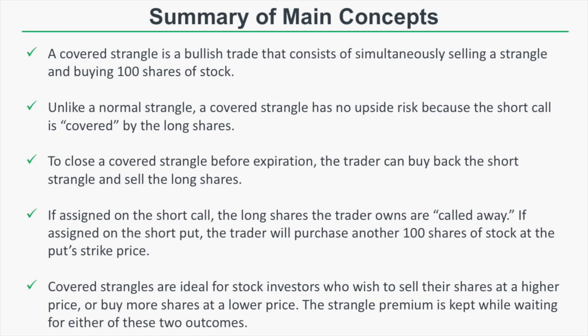To recap: a covered strangle is a bullish trade consisting of simultaneously selling a strangle and buying 100 shares of stock. Unlike a normal strangle, a covered strangle has no upside risk because the short call is covered by the long shares. To close before expiration, buy back the short strangle and sell the long shares. If assigned in the short call, shares are called away; if assigned in the short put, another 100 shares are purchased at the put's strike price. Covered strangles are ideal for investors who wish to sell shares at a higher price or buy more at a lower price while keeping the strangle premium.